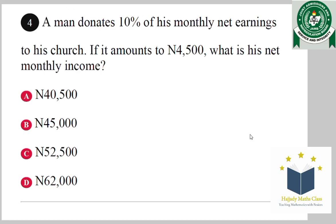Question 4. A man donates 10% of his monthly net earnings to his church. If it amounts to 4,500 naira, what is the net monthly income?